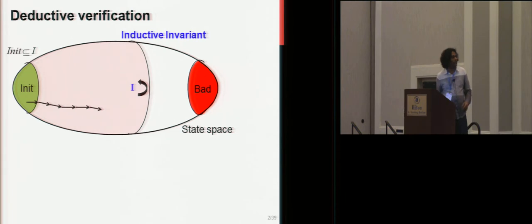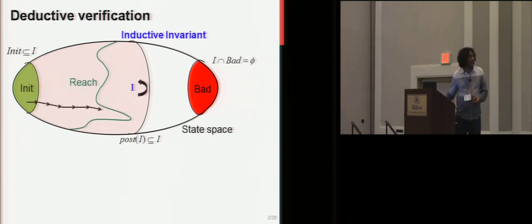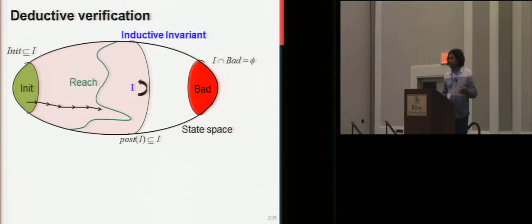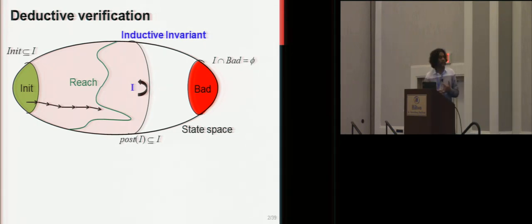It's a standard inductive hypothesis kind of proof. It says you're going to find a set I which includes all the initial states, excludes all the bad states, and is post-closed. If you can show that such a set exists, then you've proved that the program is correct. Note that the reachable state is an invariant, but it could be quite complex. You don't want to always talk about the reachable set of states, because you'll find simpler invariants which are larger. The inductive invariant is typically driven by the property you're trying to prove, and depending on the property, you could find much simpler invariants. So there are many invariants, and you have to synthesize one adequate invariant to prove your property.